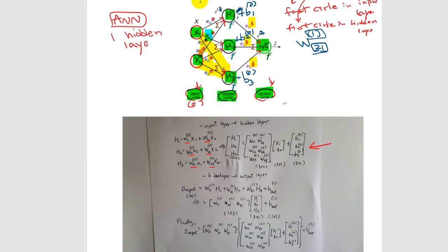The bias superscript is zero because it's related with the zero superscript of the weights. The notation can be confusing, but just be consistent with whatever notation you follow — that's the key. In this particular example, you have a 3×1 H matrix, produced by a 3×2 times 2×1, giving 3×1, plus another 3×1 bias matrix. The bias can be added or subtracted from the output, and we'll explain that in more detail later.